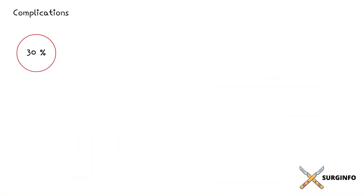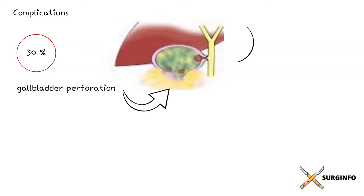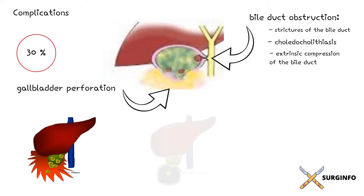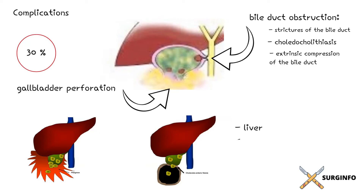Approximately 30% of patients with xanthogranulomatous cholecystitis have complications at presentation. Local complications include gallbladder perforation and bile duct obstruction. Bile duct obstruction may be due to development of strictures or cholecystitis, and rarely due to extrinsic compression of the bile duct — Mirizzi syndrome. Prolonged cystic duct obstruction and gallbladder distension can lead to extension of the xanthogranulomatous inflammation beyond the gallbladder, with formation of hepatic abscesses and fistulas into adjacent structures such as the liver, duodenum, stomach, colon, and skin.